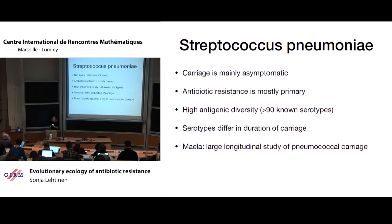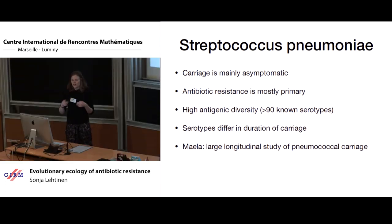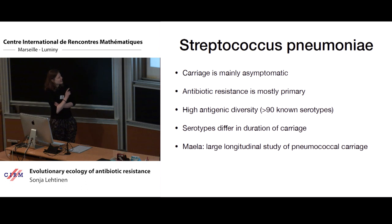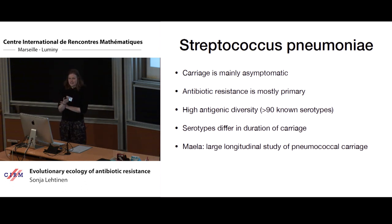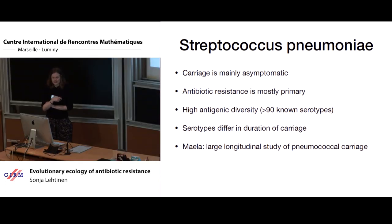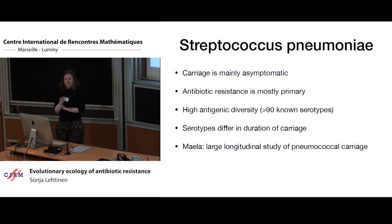It's quite rare for resistance to evolve de novo during treatment. There is very high antigenic diversity — over 90 known serotypes. And importantly for this talk, the serotypes have different properties, including variation in how long they're carried for. I'll be talking a lot about a dataset from Maela in Thailand, which is a large longitudinal study of pneumococcal carriage in children.